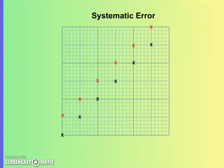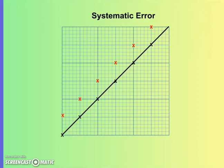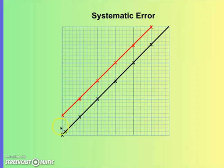Now let's look at graphing with a systematic error. The line of best fit represents the data for the true value. The red points are what a student actually measured, and if we draw a line of best fit for those points, we see a different shape. The difference between those two lines of best fit stays the same all the way along the graph — it's consistent the entire time — which suggests we're looking at systematic error.